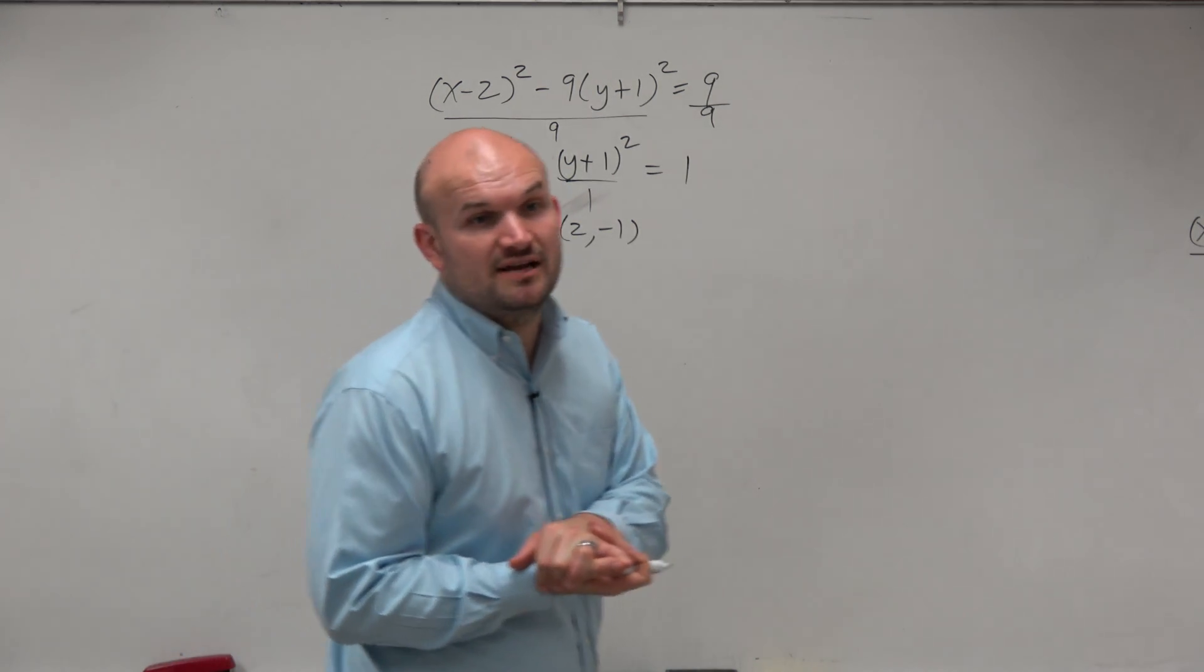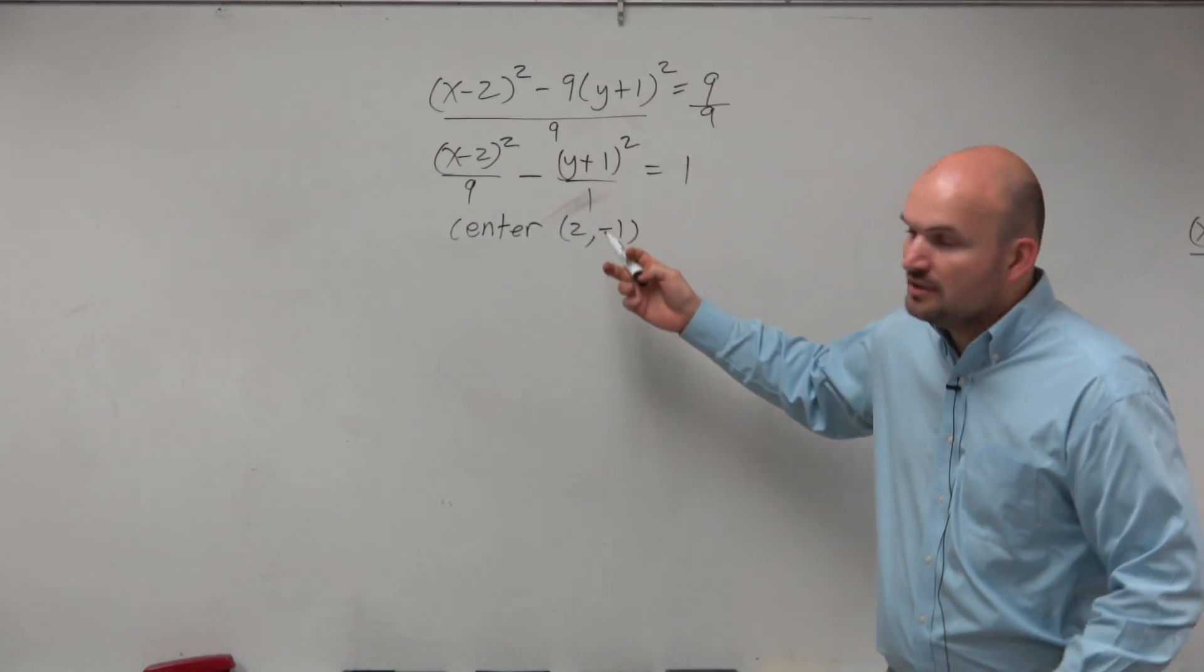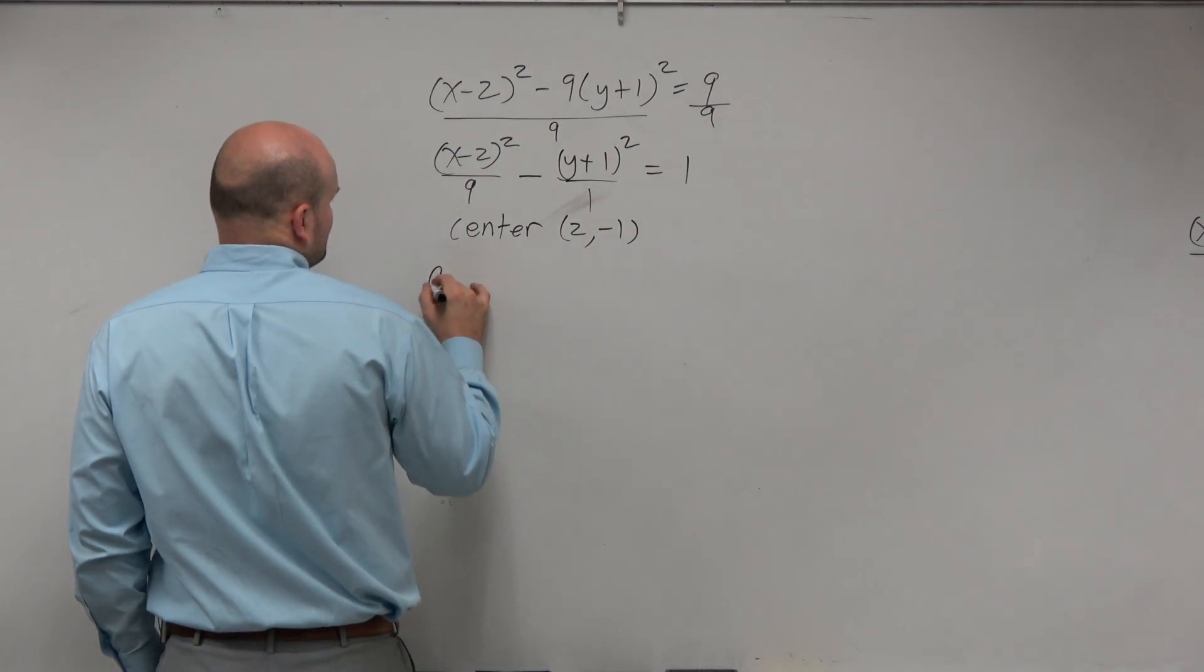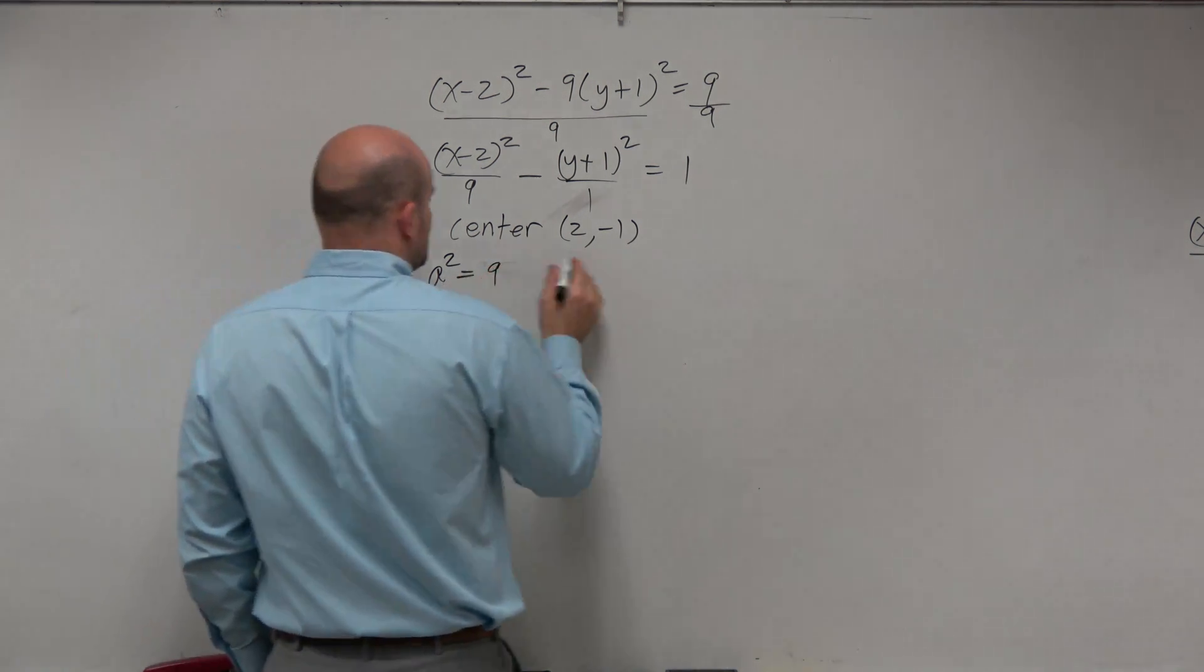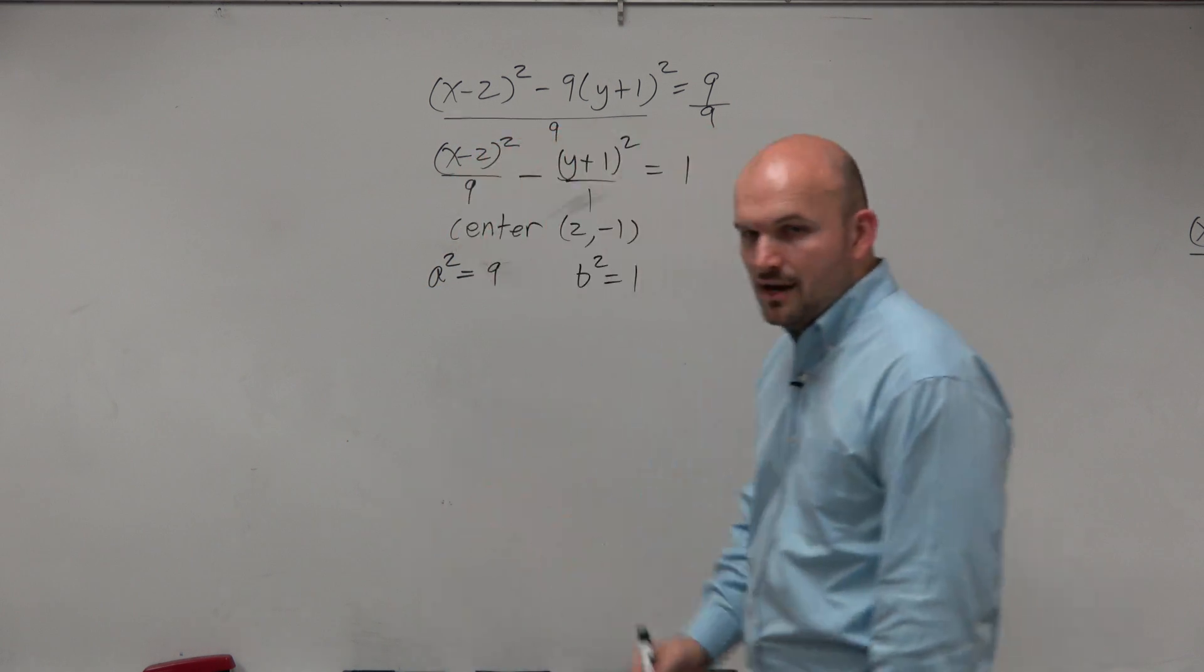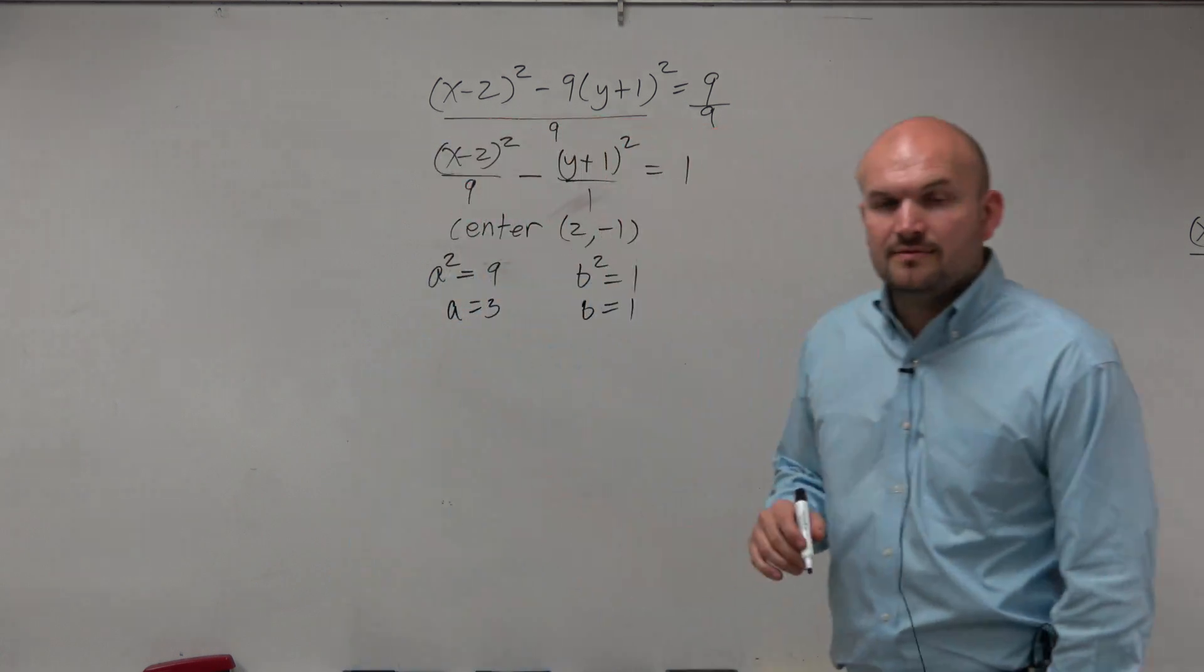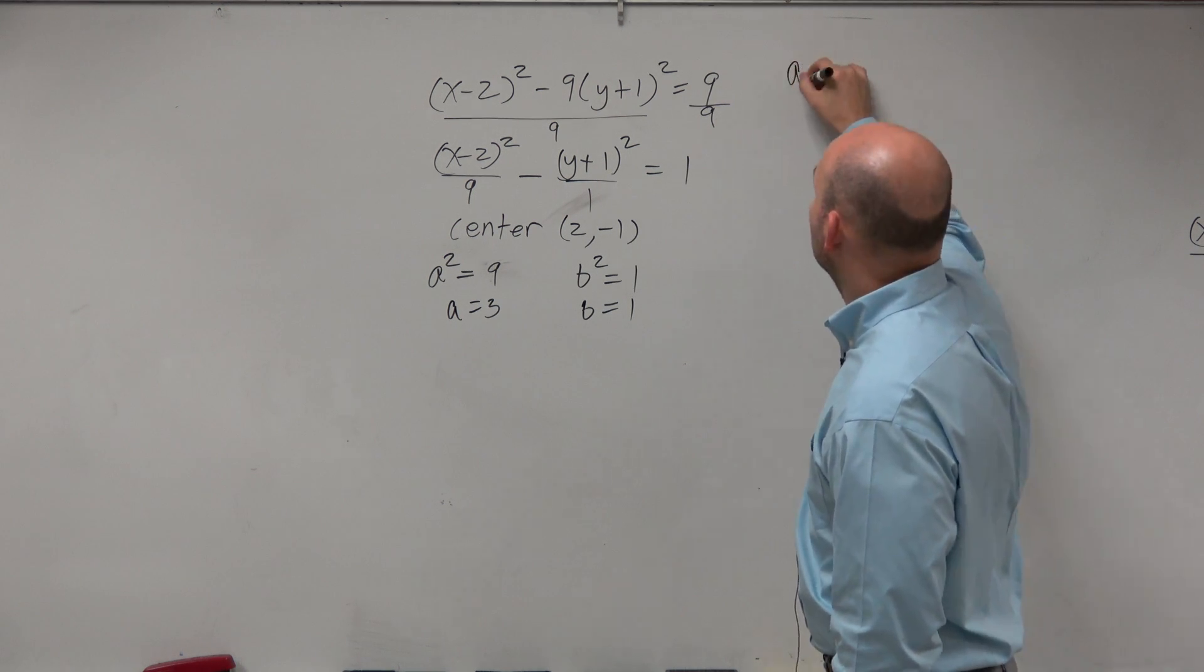Now, what we need to do is identify our a and our b. And our a is not always larger than our b, but in this example, that ends up working, because it's a² minus b², right? So we're good in this case. So a² is 9, and b² is equal to 1. So a is going to be equal to 3, b is going to equal to 1.